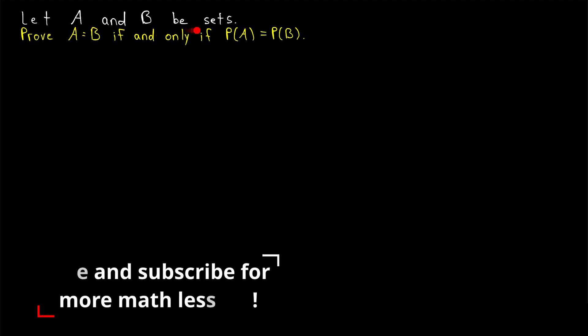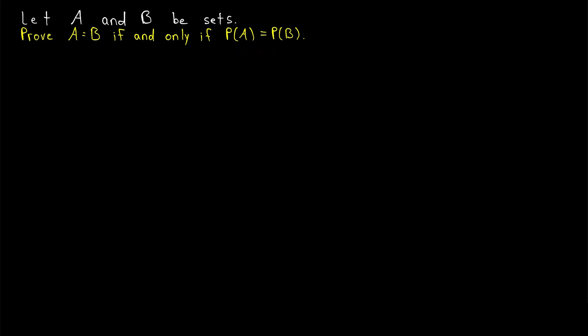Let A and B be sets. We're going to prove that A and B are equal if and only if their power sets are equal. This should seem like a pretty intuitive result. If two sets are the same, then their subsets must be the same, and thus their power sets have to be the same. The converse is similarly intuitive. This is one of those straightforward set theory proofs where we just have to apply a bunch of definitions in a pretty straightforward manner.